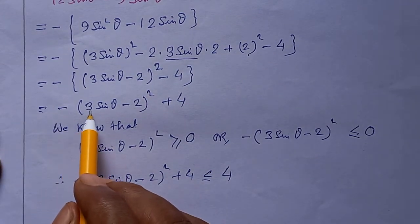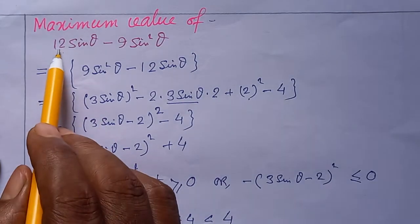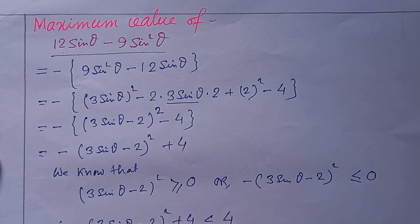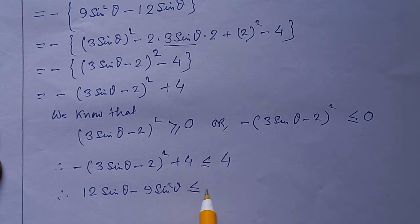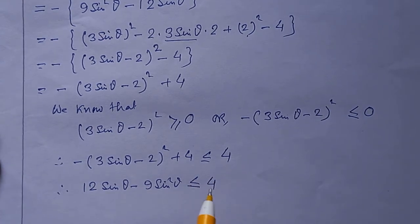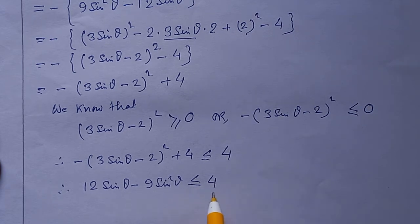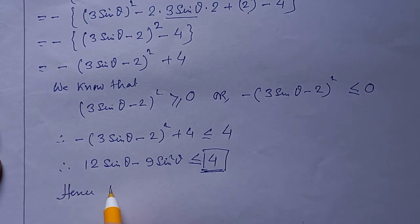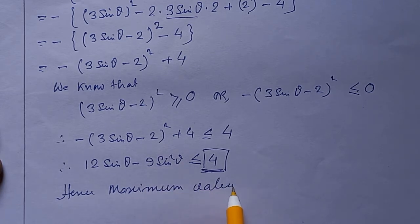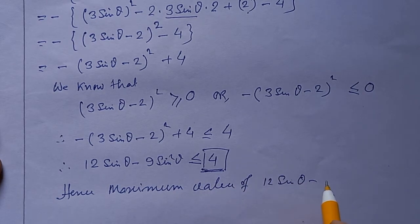Since minus (3sinθ - 2)² + 4 equals 12sinθ - 9sin²θ, we conclude that 12sinθ - 9sin²θ is less than or equal to 4. So 4 is the maximum value of 12sinθ - 9sin²θ.